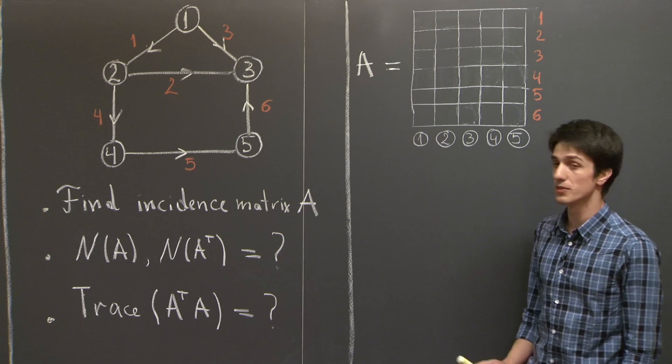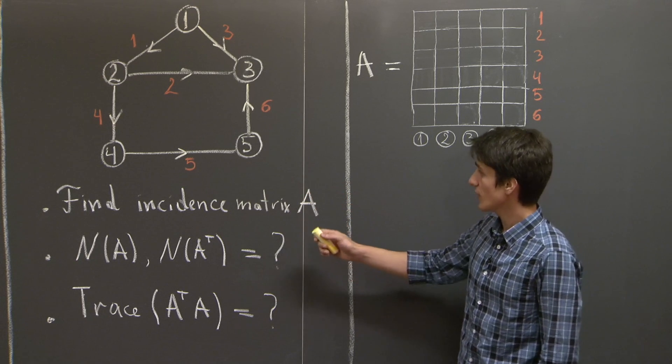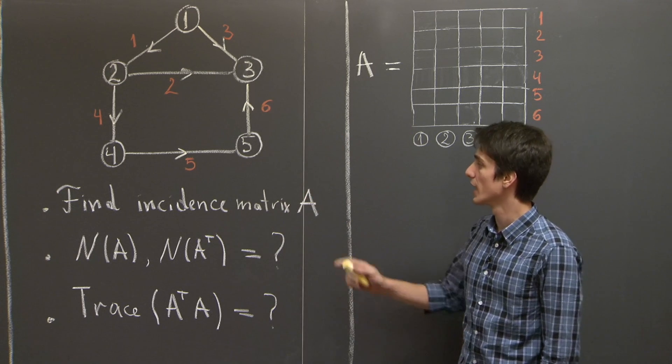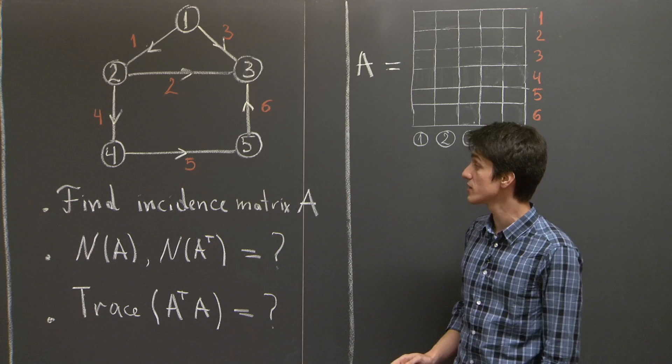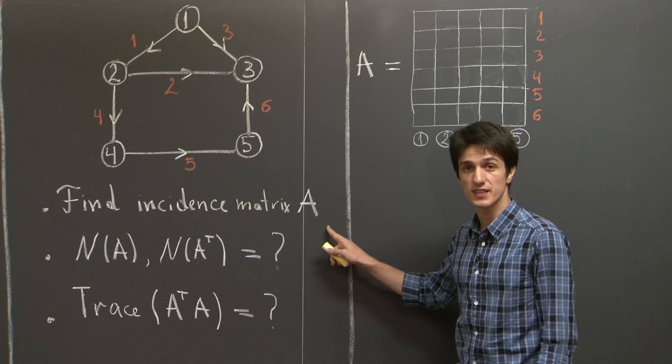In particular, we'll do the following problem. We're given this very simple graph here with five nodes and six edges. We've already labeled them, and we've put directions on the edges.